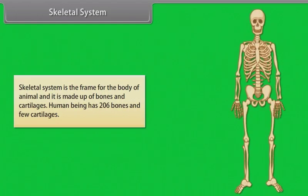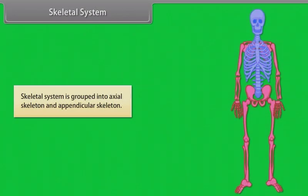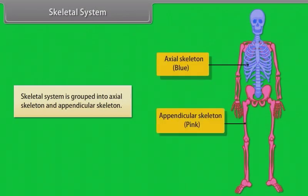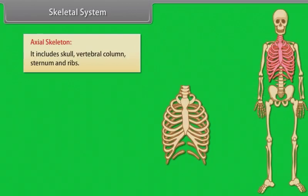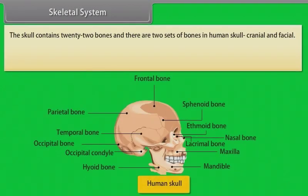Skeletal system: the skeletal system is the frame for the body of an animal and is made up of bones and cartilages. Human beings have 206 bones and a few cartilages. The skeletal system is grouped into the axial skeleton and the appendicular skeleton. The axial skeleton includes the skull, vertebral column, sternum, and ribs.